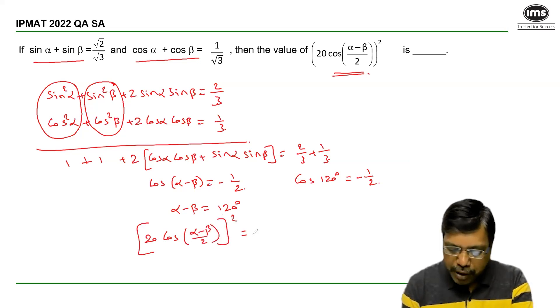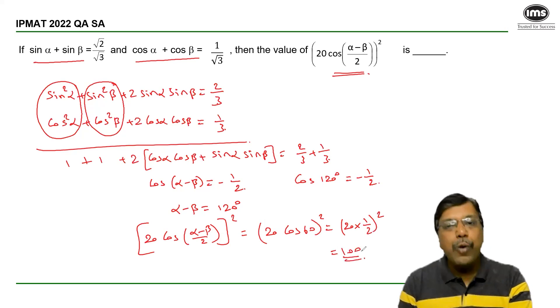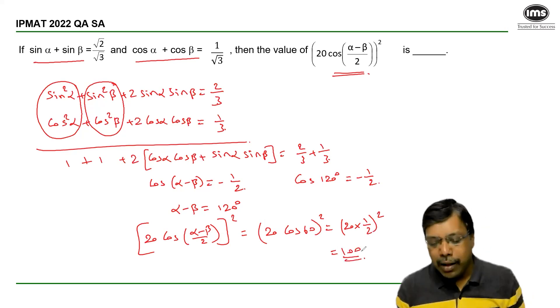Cos alpha minus beta is 120 whole square, so which is equal to 20 into cos 60 whole square. Now cos 60 is 1 by 2, so 20 into 1 by 2 whole square which is equal to 5.